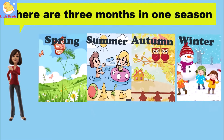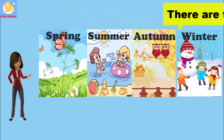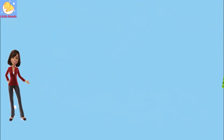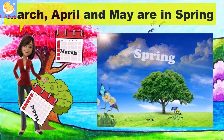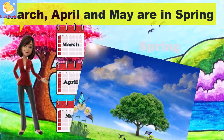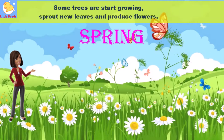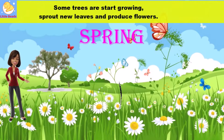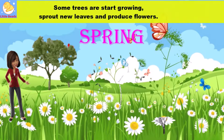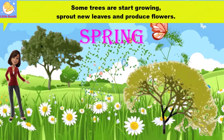There are three months in one season. Let's take a look. March, April and May are in spring. Some trees start growing, sprout new leaves, and produce flowers.